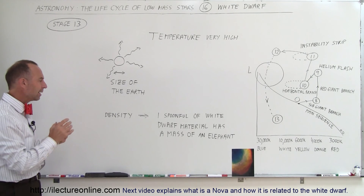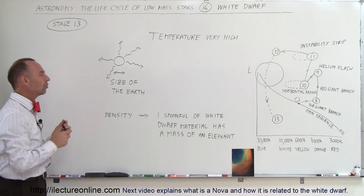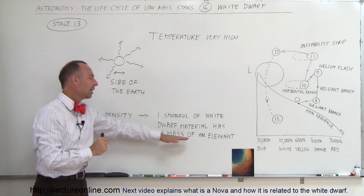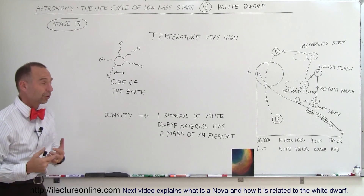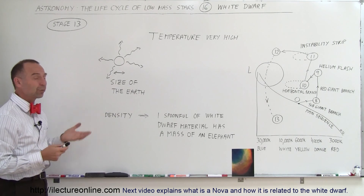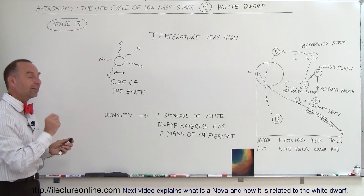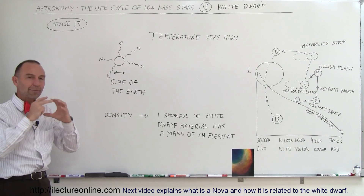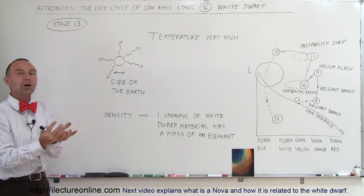Typically speaking, the density of white dwarf material is so dense that if you take one spoonful of material off the surface, it would have the mass of an elephant on the Earth. The density of a white dwarf is roughly 75,000 times the density of the Earth — enormously dense material packed together, almost pure carbon.